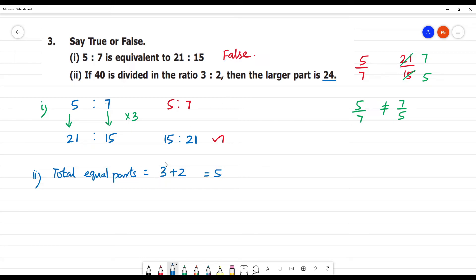Larger part is 3 is the larger part. So 8 times 3 is how much? 24. The larger part is 24. Now smaller part, so 2 parts are 2 by 5 multiplied by 40. So 8 times 2 is 16.